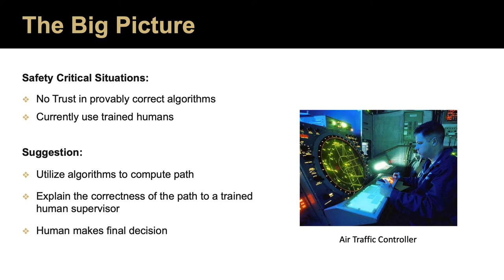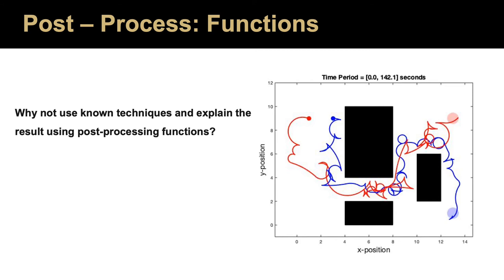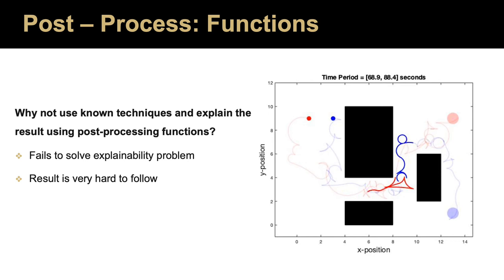One method of generating the segmentations is by using known motion planning techniques such as RRT to plan and then write post-process functions to segment the path for us. This would solve the planning problem but fails to even consider the explainability problem. And without any control on how many segments are required to explain the path, we might end up in a situation like this one where there are a lot of tiny segments and the plan takes a lot of images to explain.